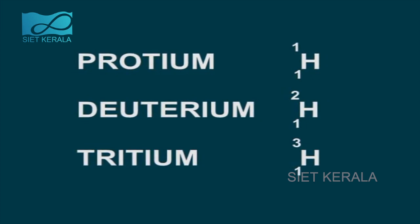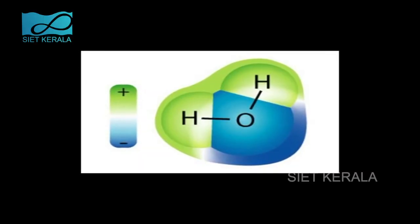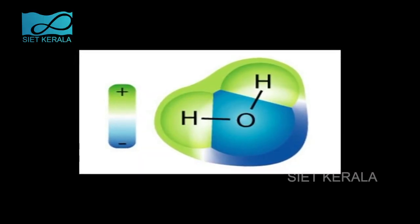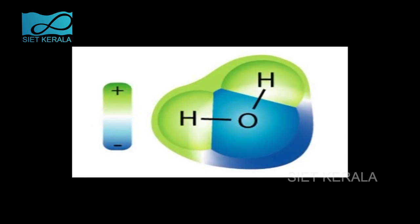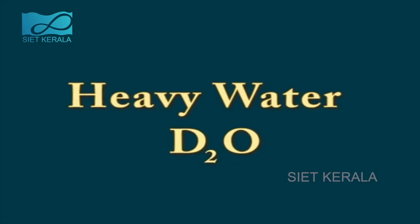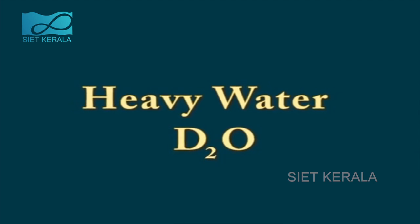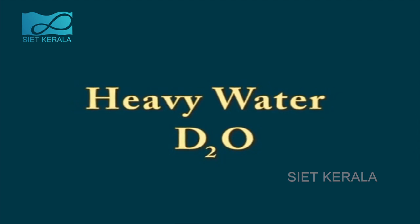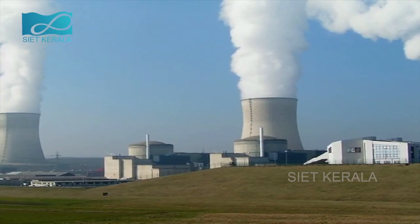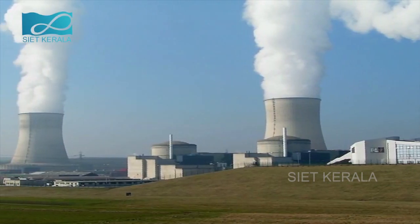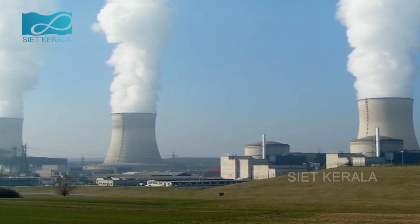In protium, there are no neutrons. The main compound of hydrogen is water. Just as water is formed by hydrogen combining with oxygen, heavy water (D2O) is formed by deuterium reacting with oxygen. Heavy water (D2O) is mainly used in nuclear reactors.